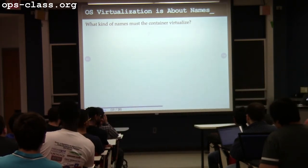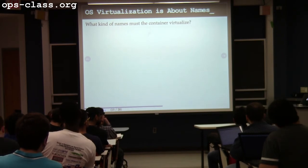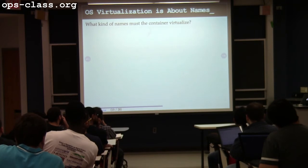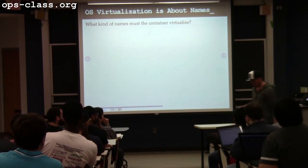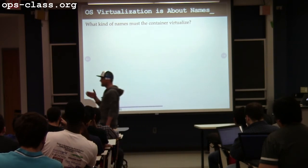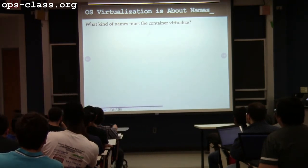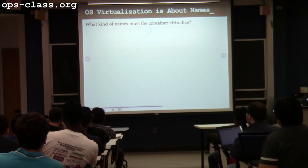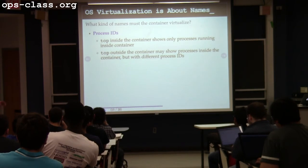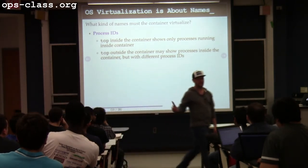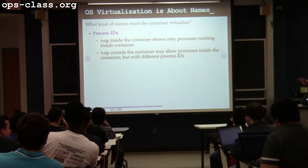Memory isn't so much a name to worry about — the operating system naturally already provides memory isolation between different processes. Processes inside a container have their own address spaces. In order to share memory with each other, processes have to communicate to set up shared memory maps — and that's another name I have to isolate inside the container. If I can't name a process, I can't communicate with it to set up a shared memory mapping. If I want to do shared memory inside the container, I can — but only with other processes inside the container.